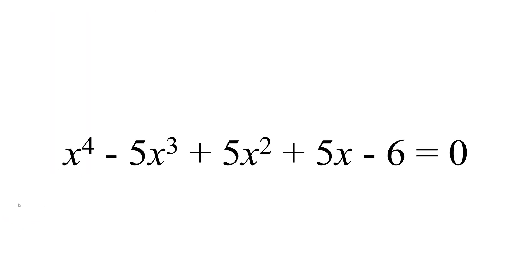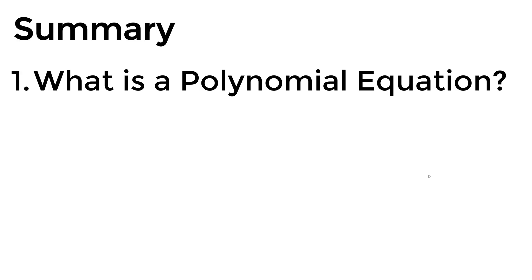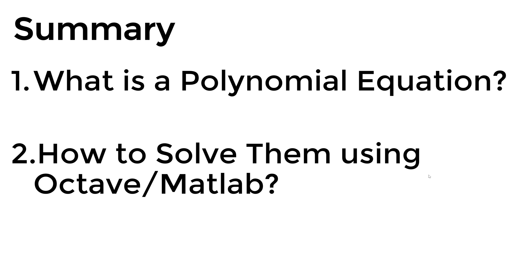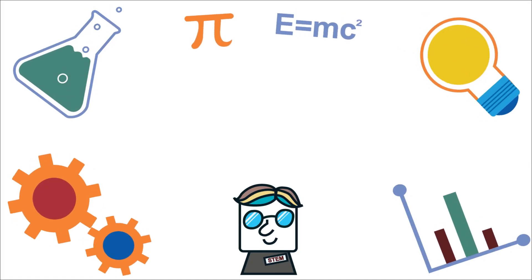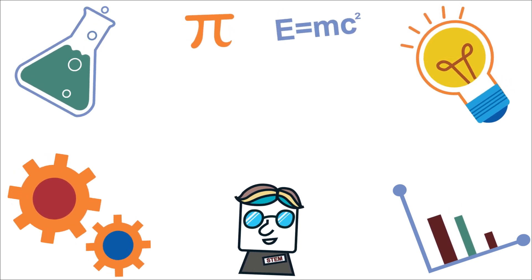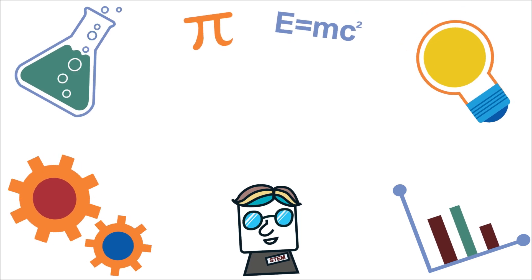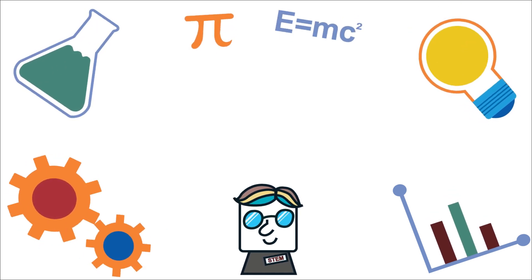Now the question comes: what if you have a higher order polynomial equation, which is x to the power 4 minus 5x cubed plus 5x squared plus 5x minus 6 equal to zero? I think you've learned enough to solve this using pen and paper, graphically, and using Octave and MATLAB — I'll leave it as a question for you. If you find a solution, please share it in the comment section below. In summary, we talked about what a polynomial equation is and how to solve them using Octave and MATLAB. I hope this tutorial video is useful. Thumbs up if you enjoyed, and please consider subscribing to watch similar videos in the future. See you next time.